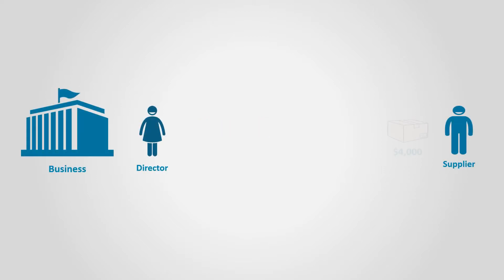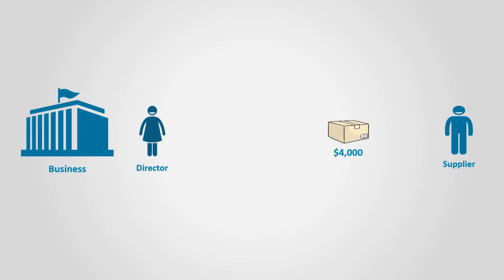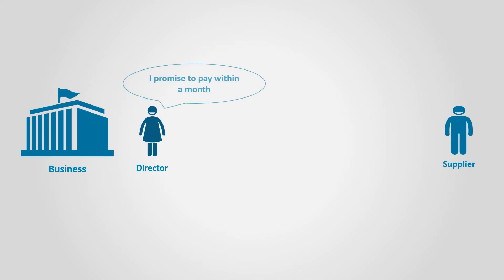Notes payable. Assume that a business bought goods for $4,000 from a supplier and promised to pay within one month. Usually, suppliers agree on such terms and accept the delay in payment without charging any interest on that amount. It is regarded as accounts payable.